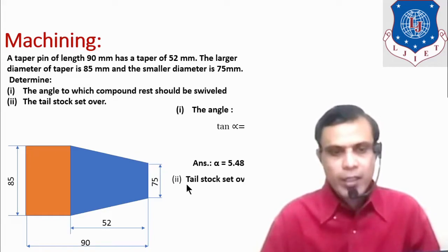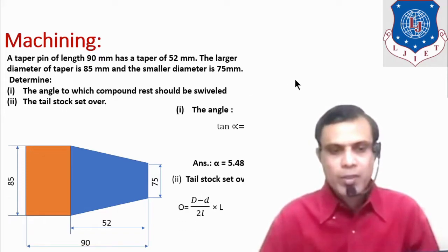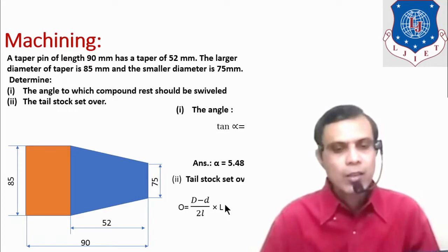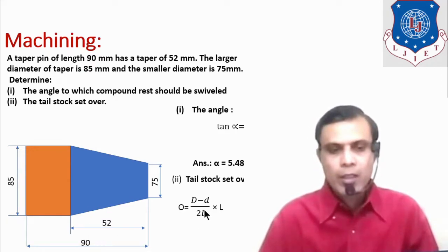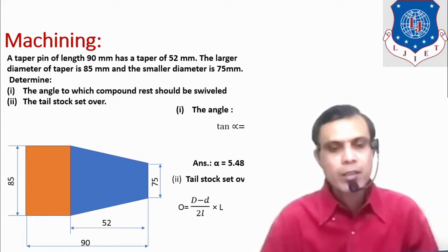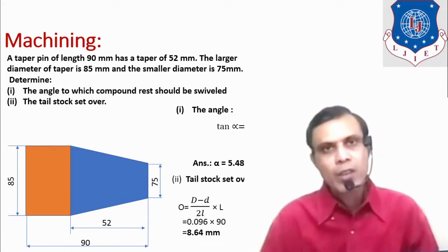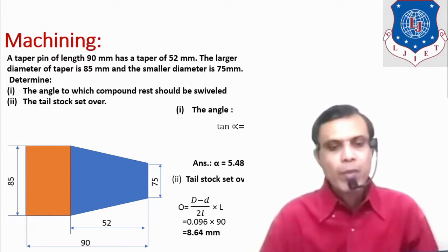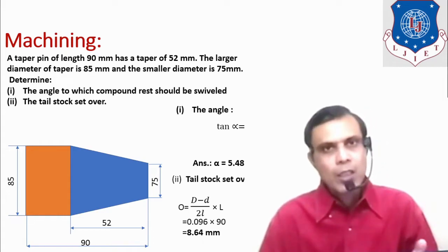Next, find the tailstock set over distance. This is calculated using: offset distance O = (D − d) / (2L) × L_total, where L_total is the total length of the workpiece, given as 90 mm. We already calculated (D − d)/(2L) = 0.096. So O = 0.096 × 90 = 8.64 mm. The tailstock must be offset by 8.64 mm to produce the required taper.